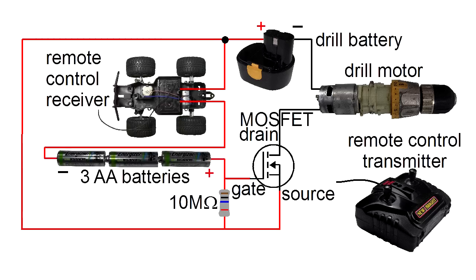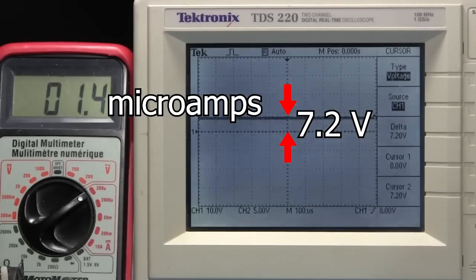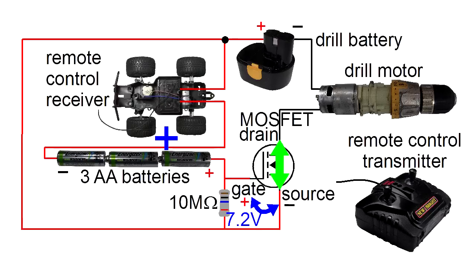So I added these batteries here. With the remote control's voltage added to their voltage, when running there's around 7.2 volts, which is enough voltage to turn on the MOSFET and get the motor running.